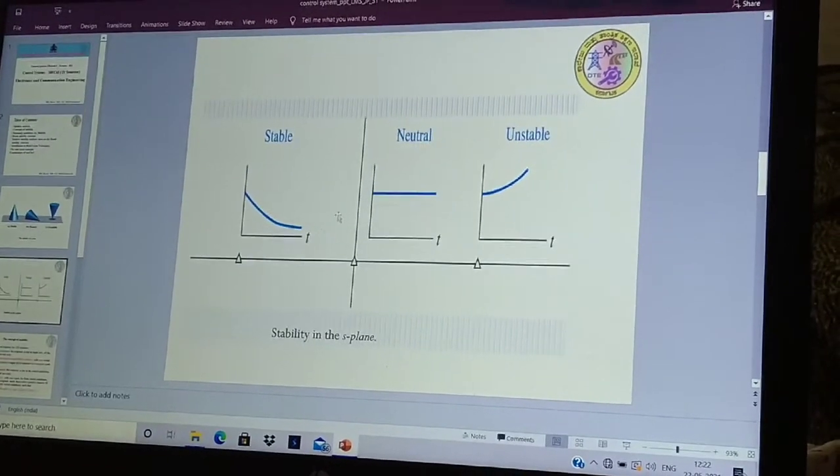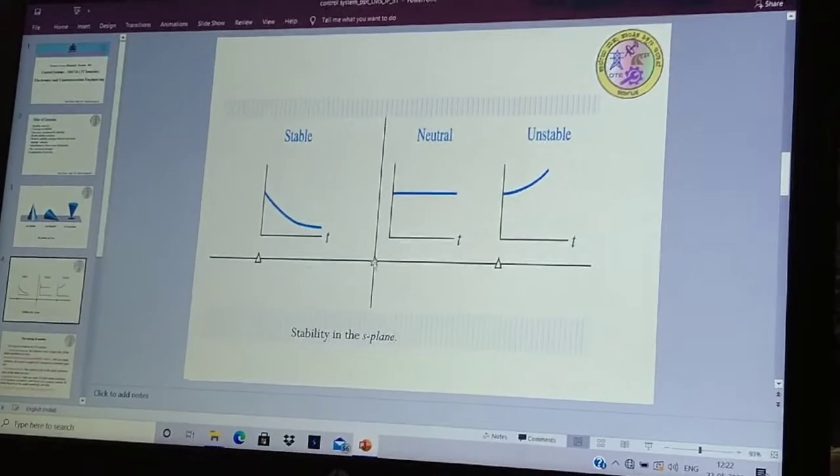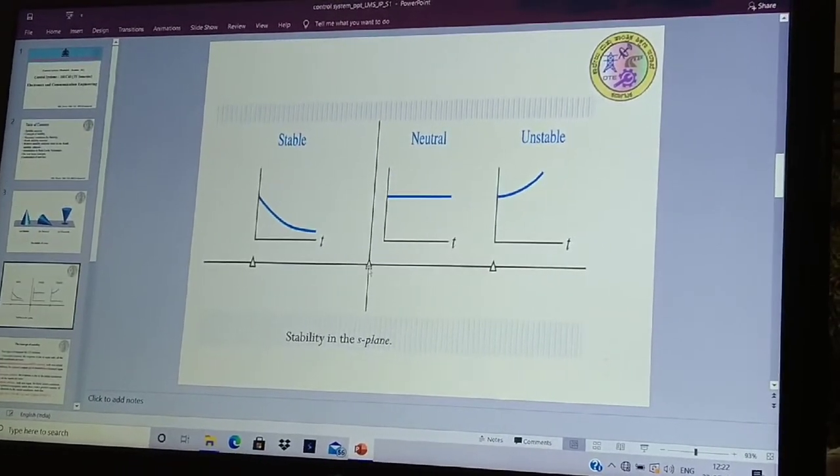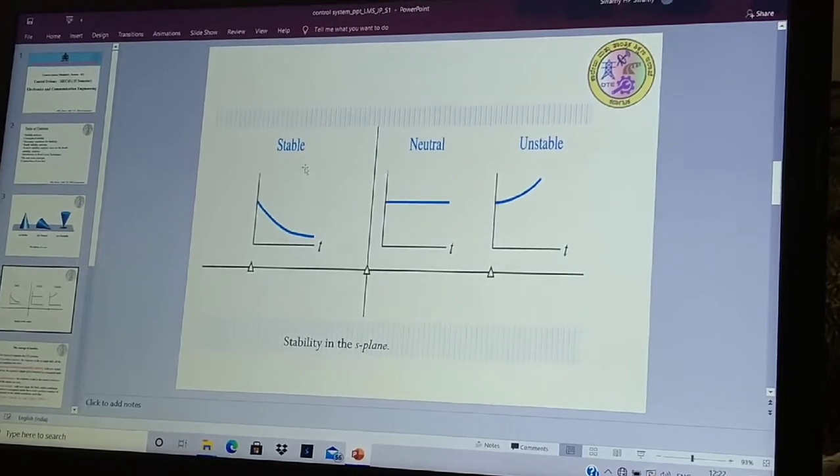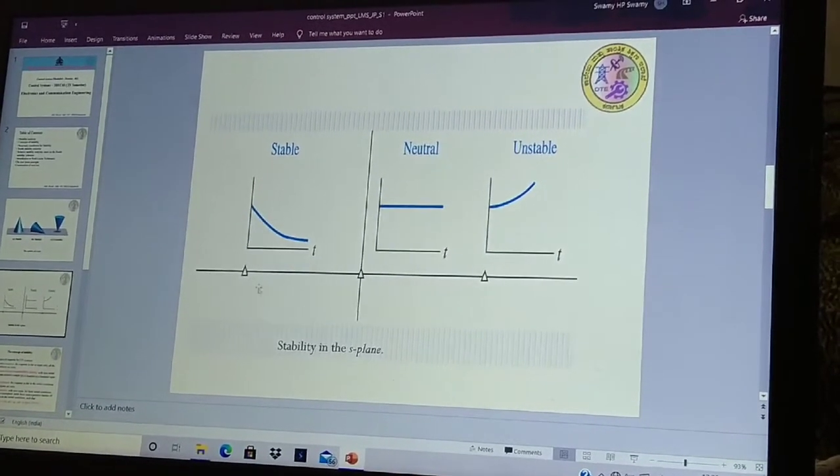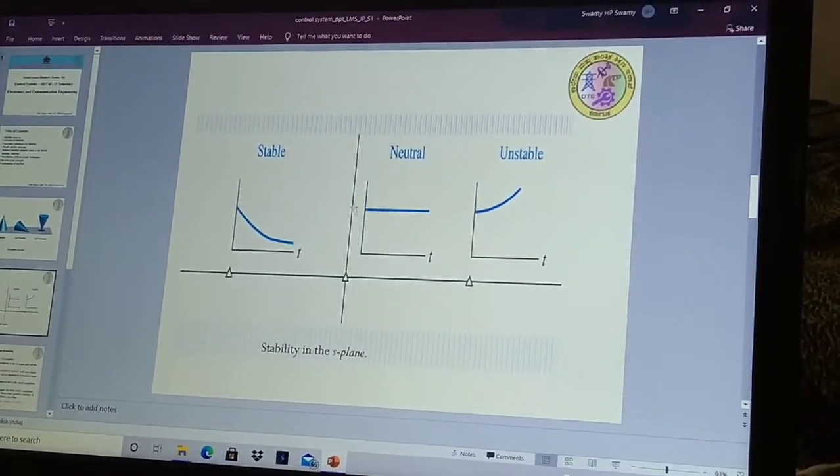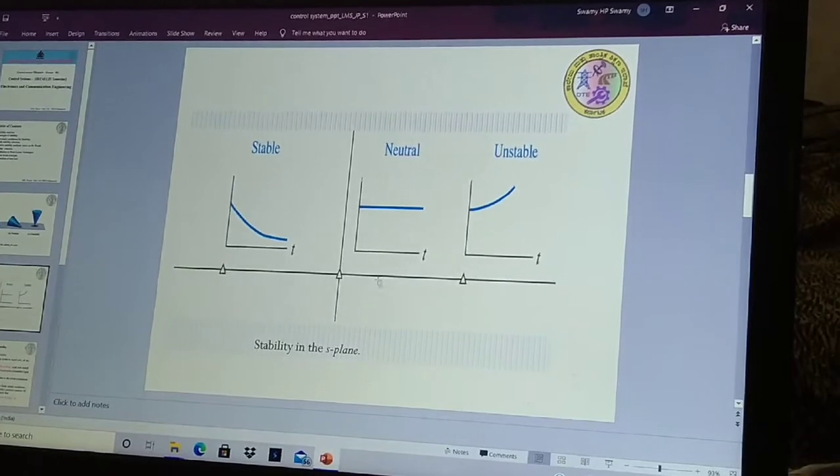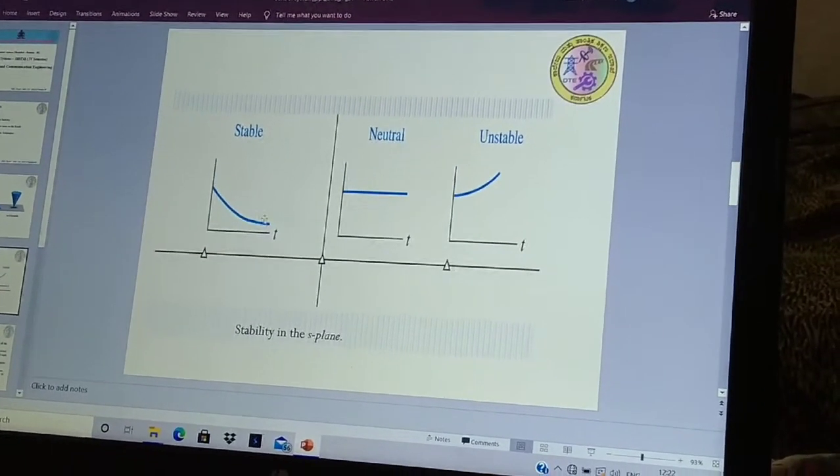This can be represented by the dependent poles in the S plane. You see, stable system is shown here. This is S plane. This X axis is called real axis. Y axis is called imaginary axis. You see, left side of the S plane, your system is stable.